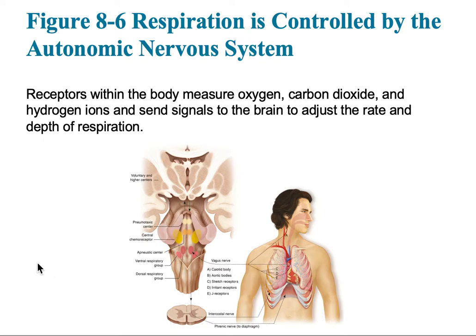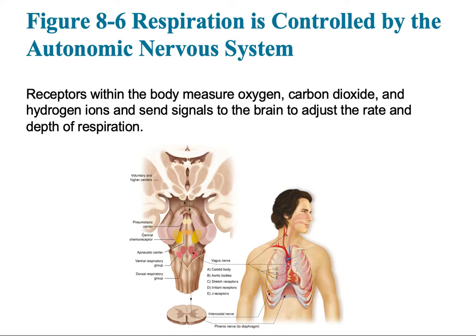We also have respiratory centers within the brainstem — the pneumotaxic and apneustic centers — that allow for more controlled breathing with a regular rate and rhythm. The apneustic center tells us when we need to take a breath, and the pneumotaxic center tells us when it is time to exhale. These are finely controlled so that our rate increases when we have exertion.